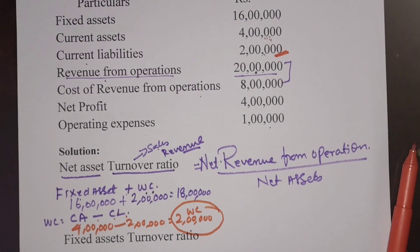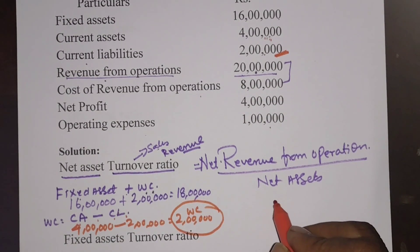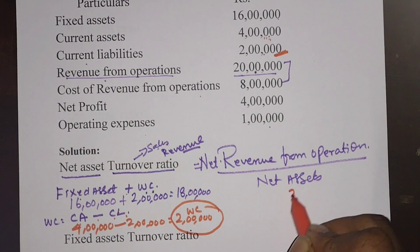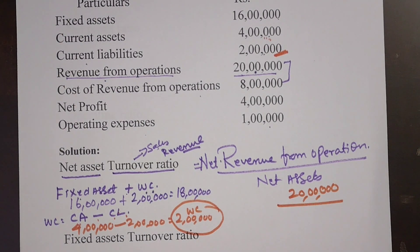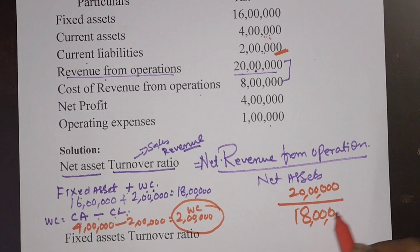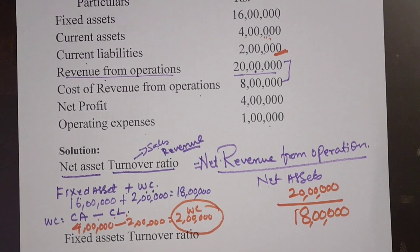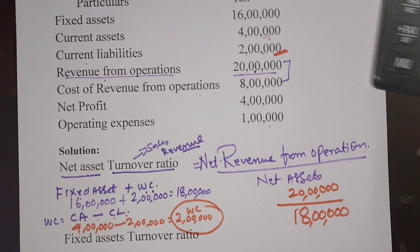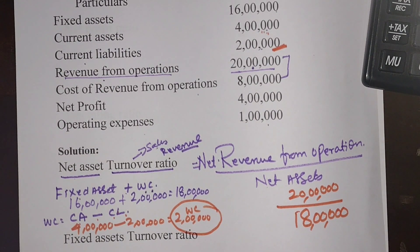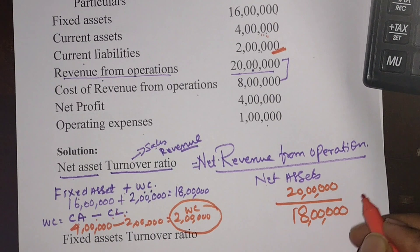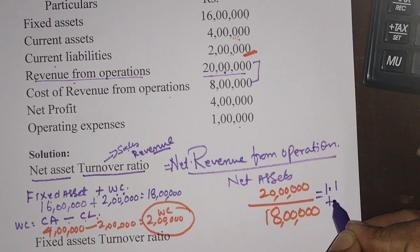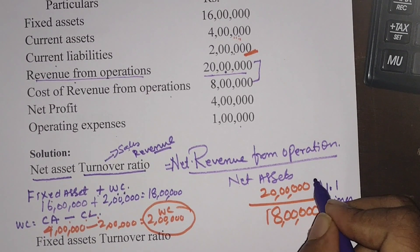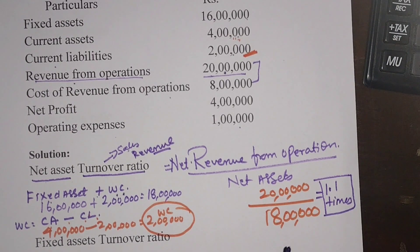Applying the formula: net revenue from operations is 20 lakhs divided by net assets of 18 lakhs, which equals 1.1 times. As already mentioned, turnover ratios will end with times.